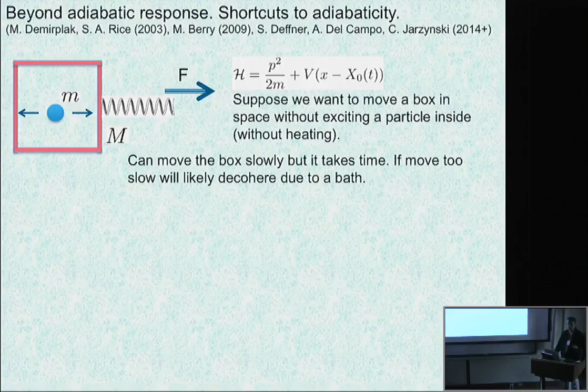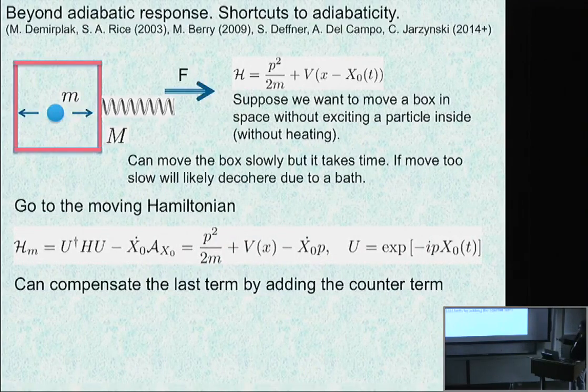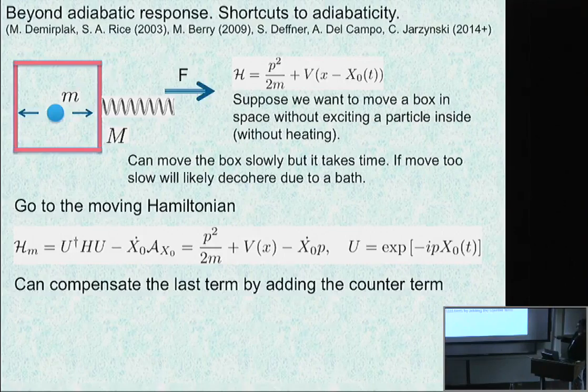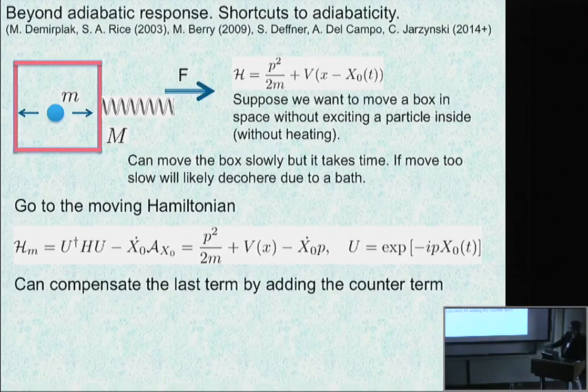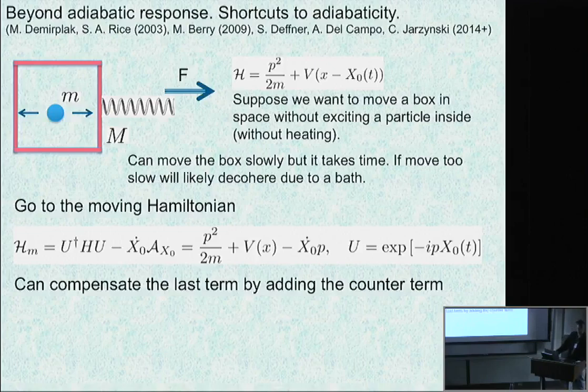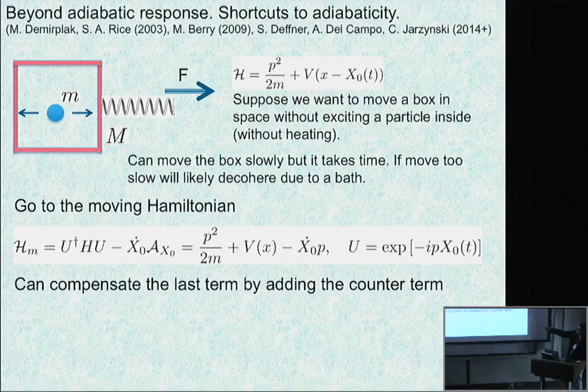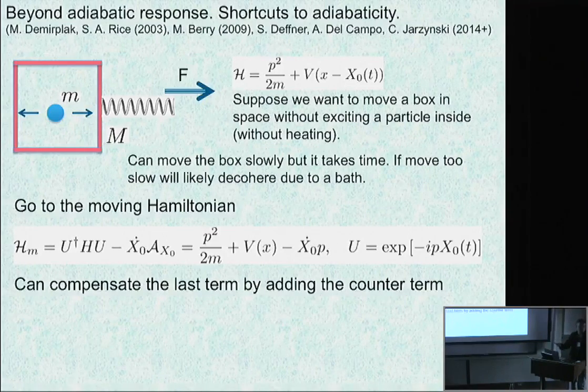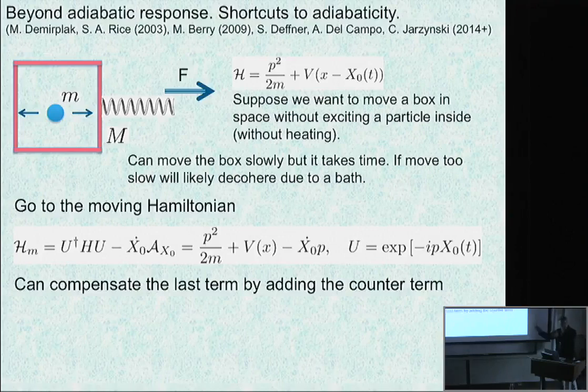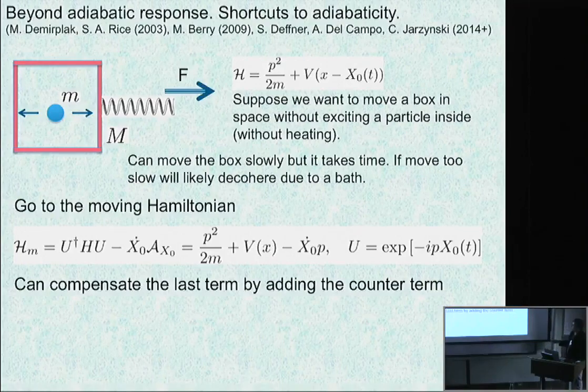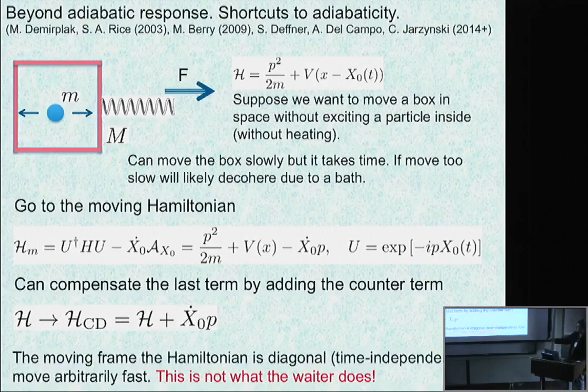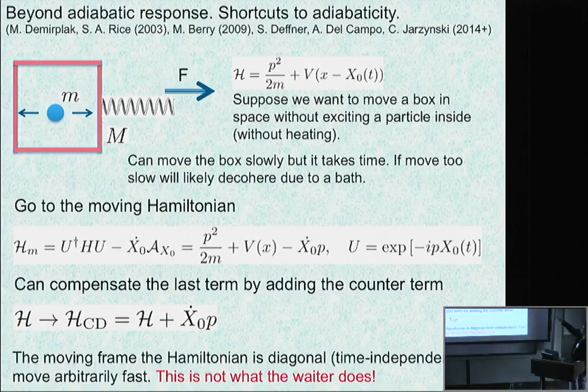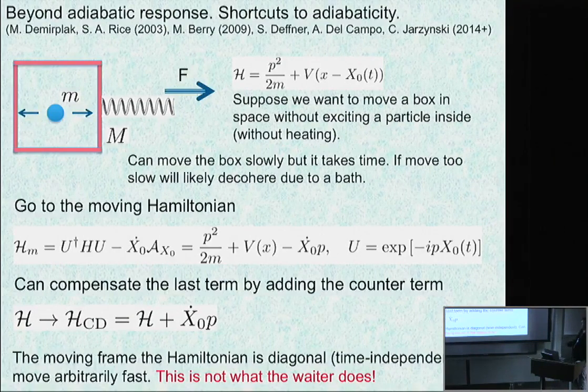If you go to a moving Hamiltonian, we get standard Galilean transformation because our gauge potential is momentum operator. So we get x minus v dot p. Now what we need to do is add this term back. If we can implement Hamiltonian which is this h plus v dot p, we are done. Hamiltonian is time-independent. But that's actually very hard to implement. You might recognize this couples to momentum as electromagnetic potential, but it's not easy.